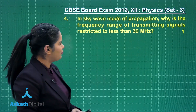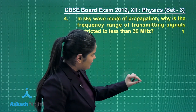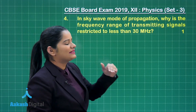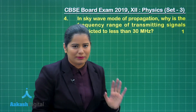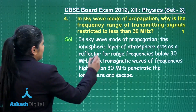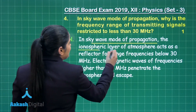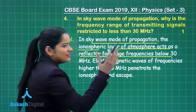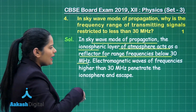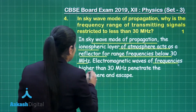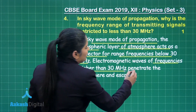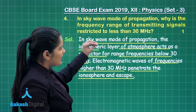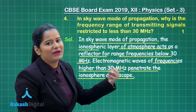Here we have the first choice of question number 4. This says: in sky wave mode of propagation, why is the frequency range of transmitting signals restricted to less than 30 megahertz? In sky wave mode of propagation, the ionospheric layer of the atmosphere acts as a reflector for frequencies below 30 megahertz. Electromagnetic waves with frequency higher than 30 megahertz penetrate the ionosphere and escape, which is why transmitting signals are restricted to 30 megahertz.